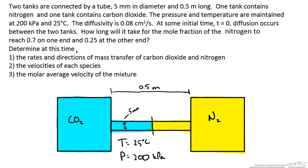Here we have two tanks that are connected by a tube, and one tank contains nitrogen and another tank contains carbon dioxide. The pressure and temperature are maintained at 200 kilopascal and 25 degrees Celsius. Now at some initial time, t equals zero, diffusion occurs, a separator is removed between the two gases.